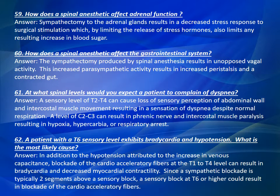Question 61: At what spinal levels would you expect a patient to complain of dyspnea? A sensory level of T2 to T4 can cause loss of sensory perception of abdominal wall and intercostal muscle movement, resulting in a sensation of dyspnea despite normal respiration. A level of C2 to C3 can result in phrenic nerve and intercostal muscle paralysis resulting in hypoxia, hypercarbia, or respiratory arrest.